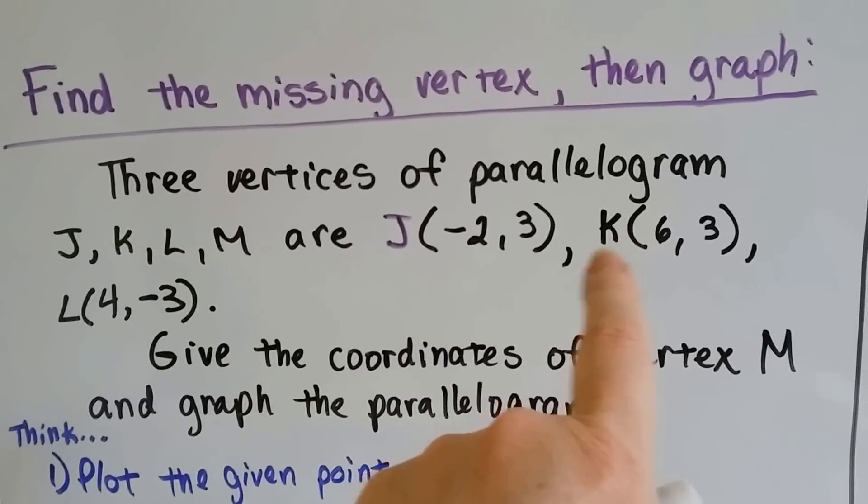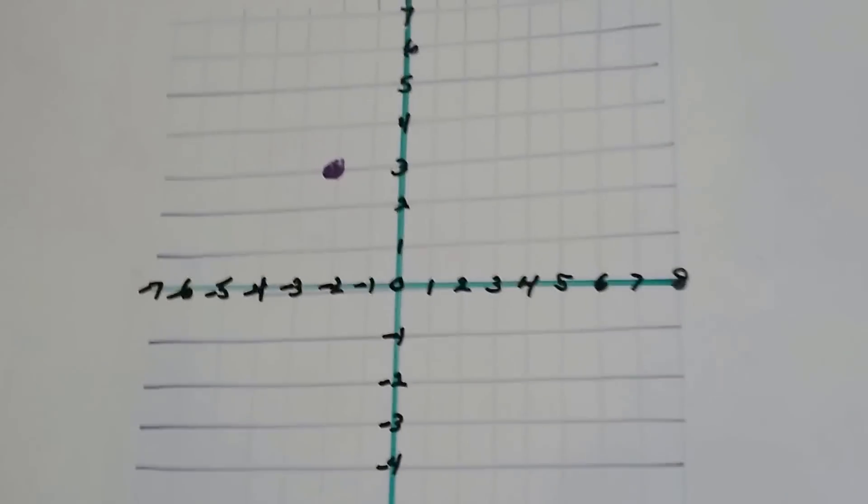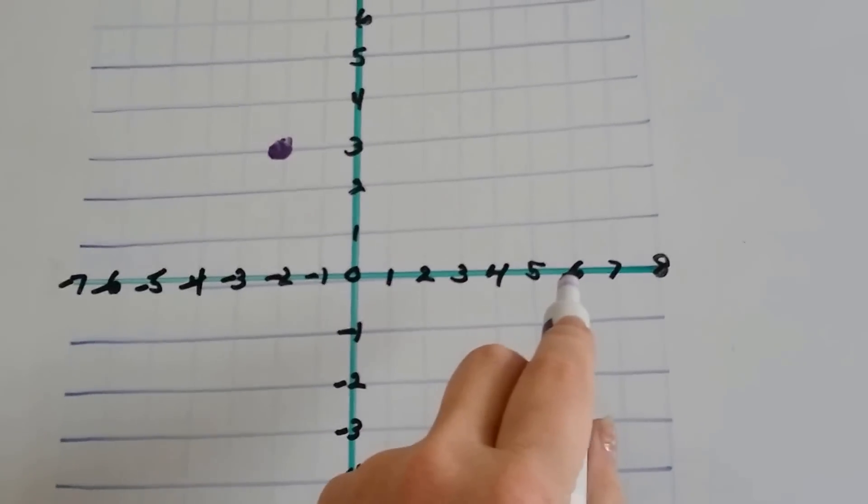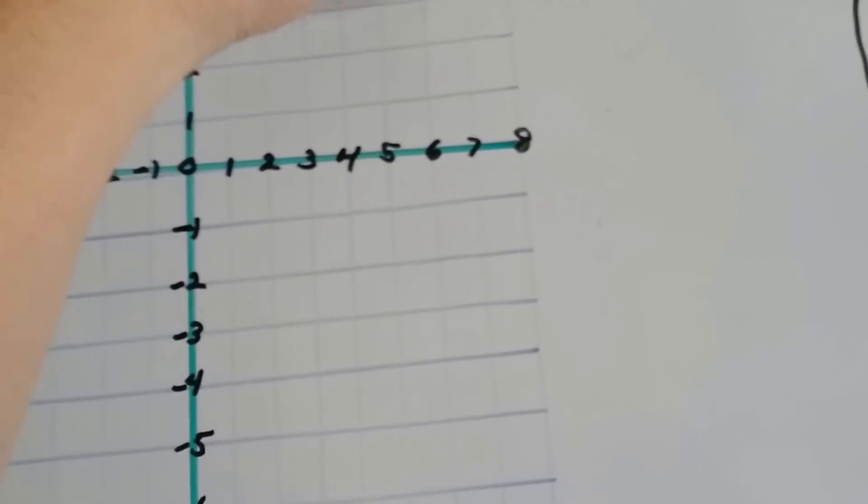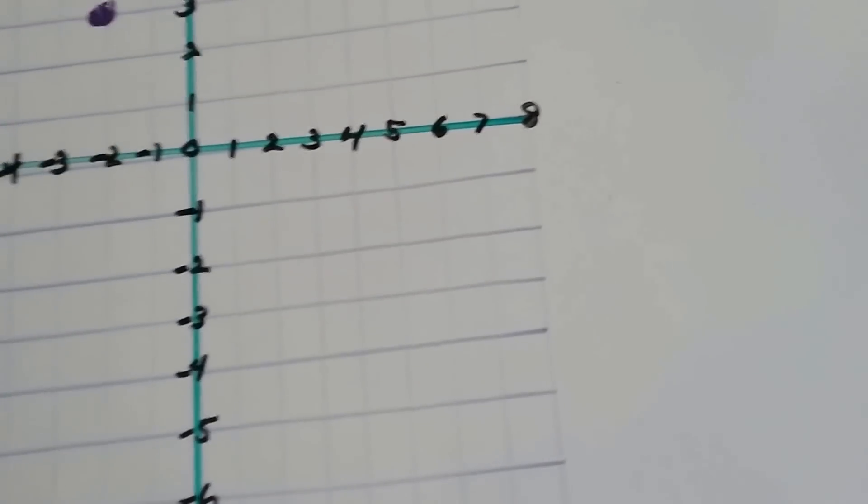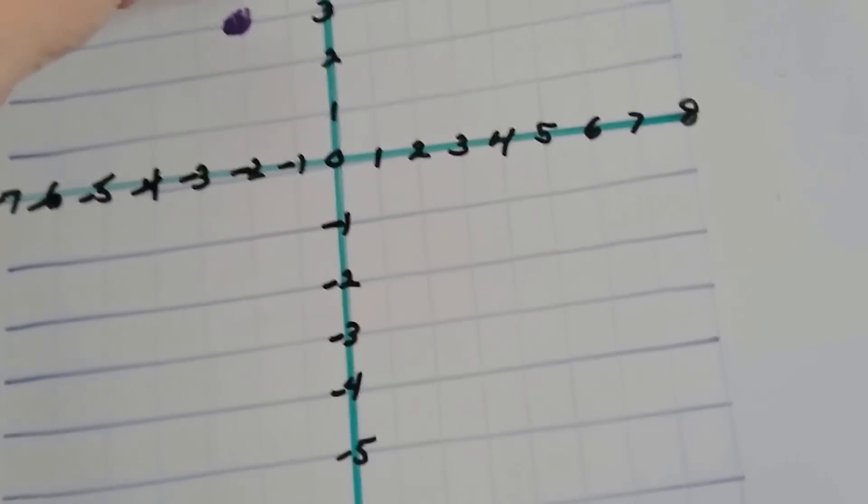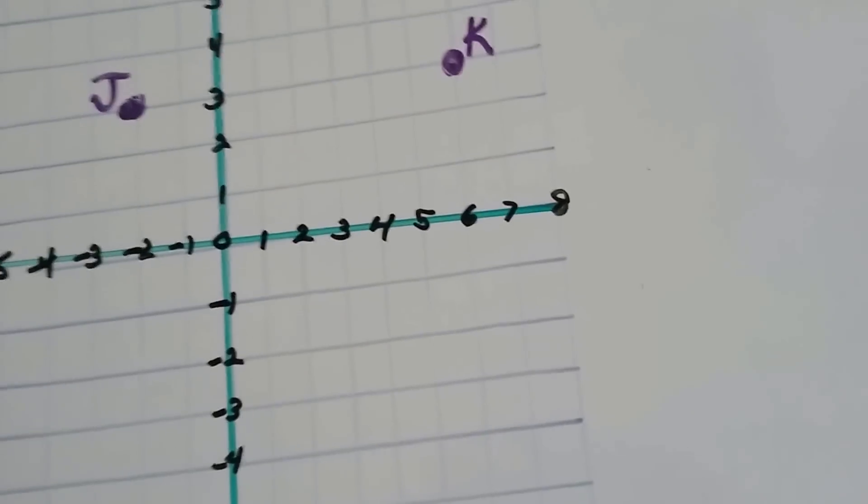Now, we need to do K, which is 6 comma 3. 6 on the x would be over here. And 3 would be right here. So, we've got to label them, too. This is J. And that's K.